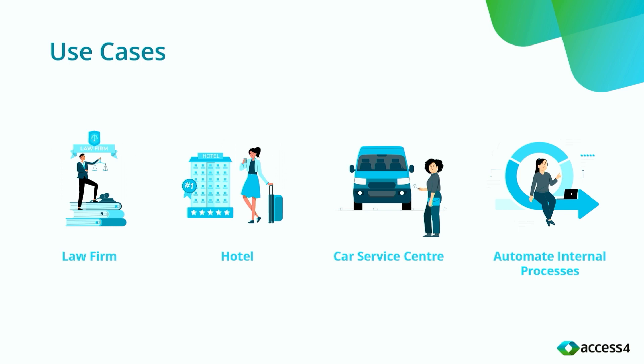The next use case is a hotel. Typically hotel rooms have phones or handsets available, and using the Sassbos API, as a person checks in you can enable and disable those phones to enable calling. When the person checks out, you can provide the calls they made using the handset. Utilising the Sassbos API you're able to pull those CDRs in real time and generate an itemised invoice, capturing that revenue and ensuring accurate billing to the end customer.